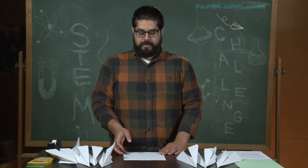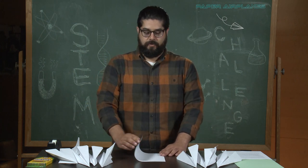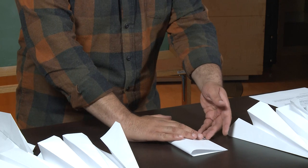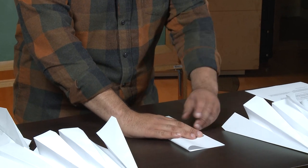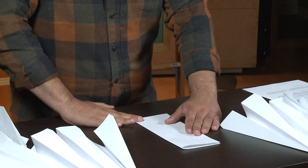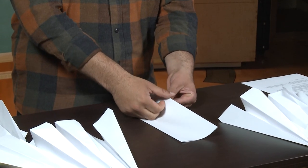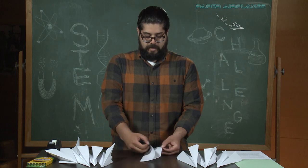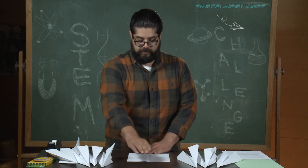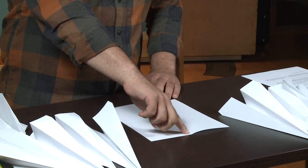So we're going to start by taking our paper and we're going to fold it right down the middle the long way, just like this. So now you have a long rectangle and we will open it up. And when you open it up, you will see there's a nice crease right down the center.